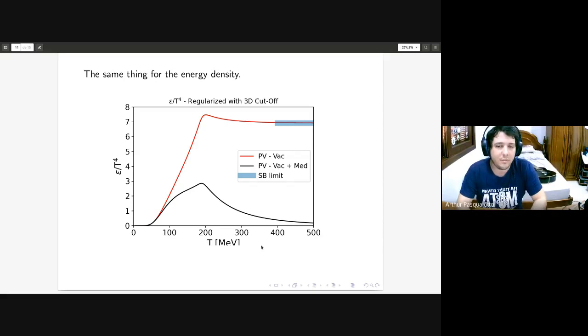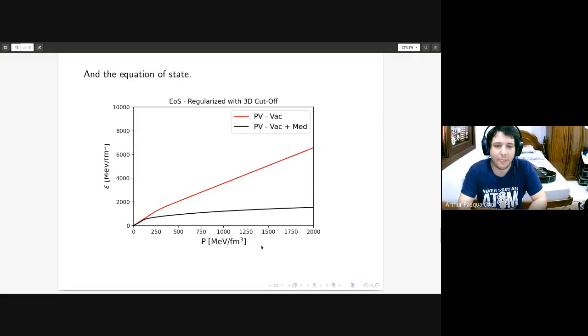What these results indicate is that if you apply the regularization to the medium part, you will scramble all the thermodynamics and it will be a little bit weird. This also happens to the equation of state if you vary the temperature - this will have a very strange result.